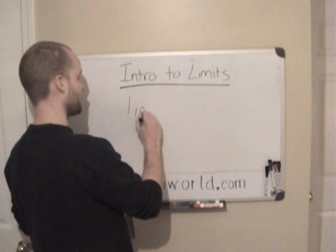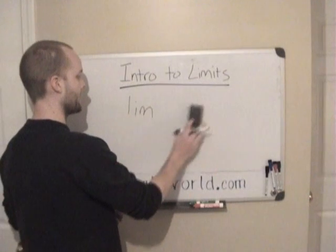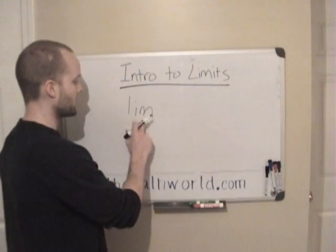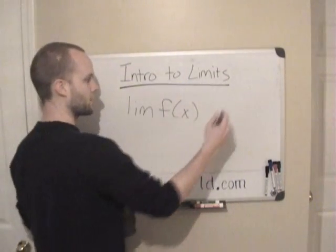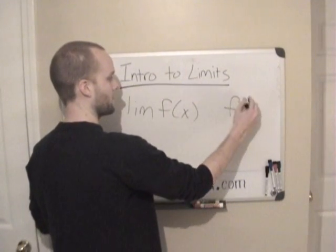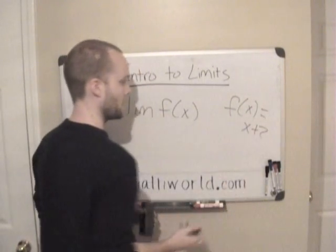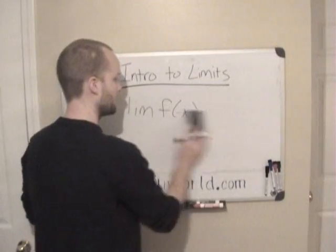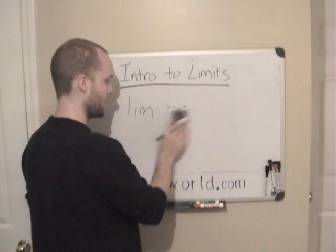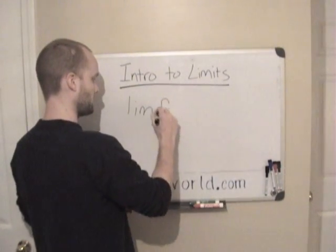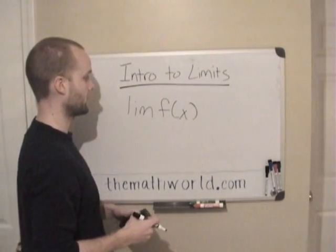You'll see limits written like this — sometimes in cursive, a lot of times they'll write it that way. But more times than not you'll see 'limit' and then the limit of some function. They may give you that function defined as, say, x plus 2. Sometimes you may just see limit of x plus 2, but a lot of times they will give you the limit of some function and then define that function separately.